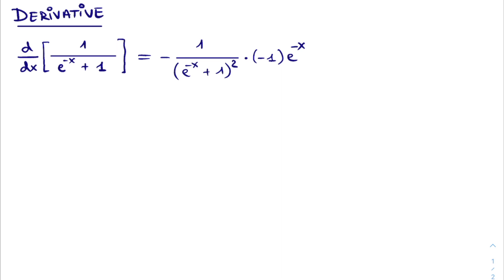Then, we derive the exponent, which simply returns the same e power, but with a minus sign, coming from the minus in front of the x in the exponent.